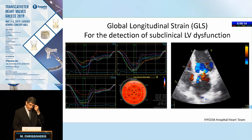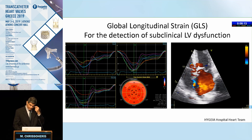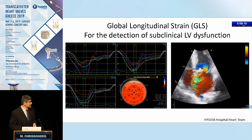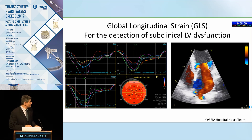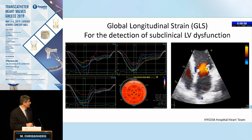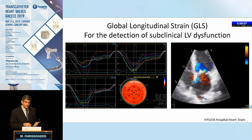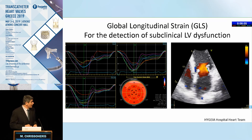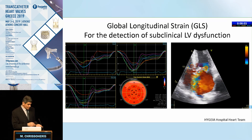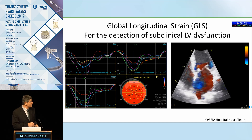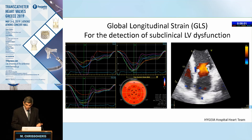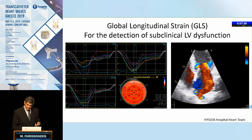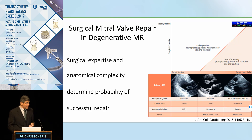Another index to screen for subclinical LV dysfunction is global longitudinal strain of the left ventricle, which may be another marker in a patient with severe MR and normal left ventricular function to detect subclinical LV dysfunction.